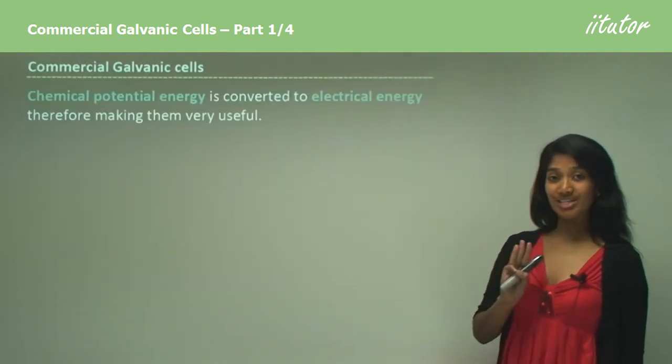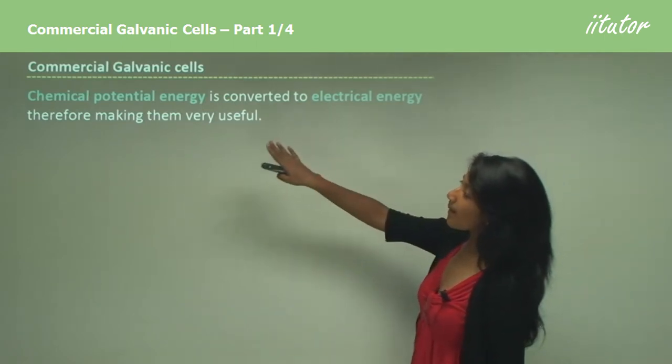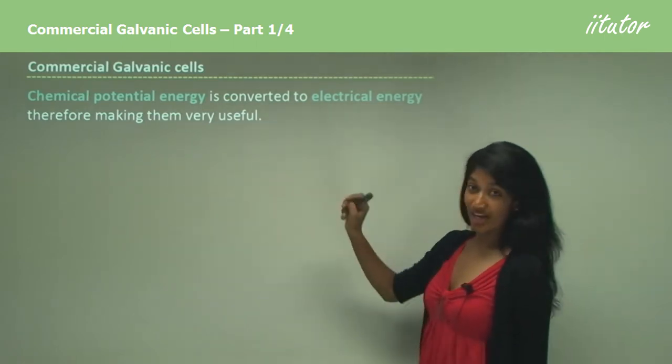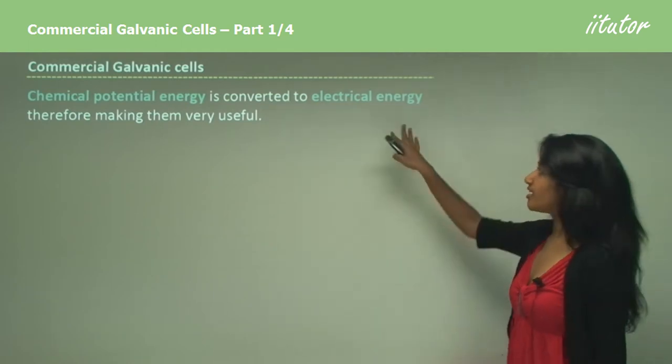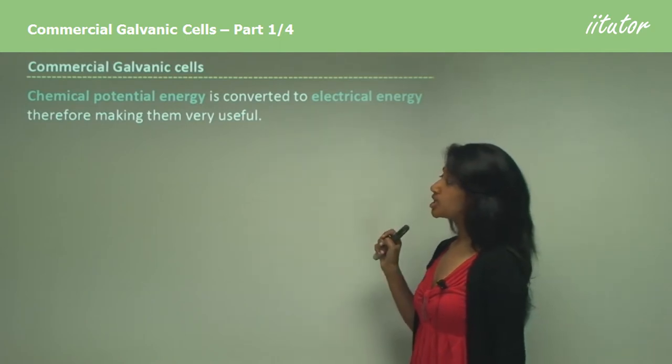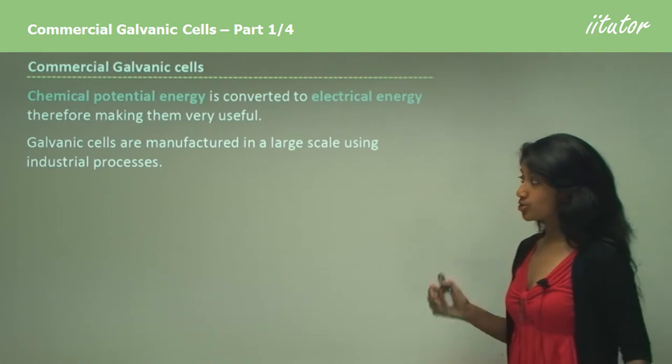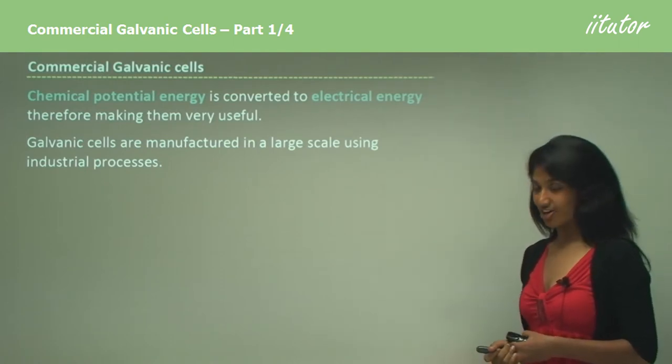So we will be learning about three different galvanic cells. Galvanic cells convert chemical energy into electrical energy. Now electrical energy is very useful, therefore galvanic cells are very useful. So they use industrial processes to manufacture galvanic cells on a large scale.